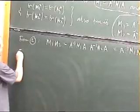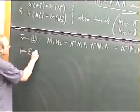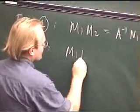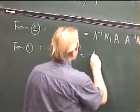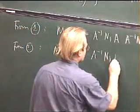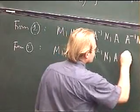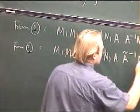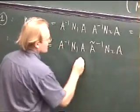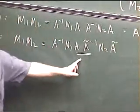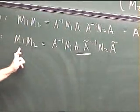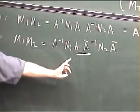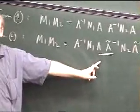That is not true for 2. If we look at 2, in this case M1 M2 would be equal to A to the minus 1, N1 A, A tilde to the minus 1, N2 A tilde. And in fact, those two will not be equal to that entity. There is no obvious relationship between M1, N2 and N1, N2 which doesn't even appear on this side.